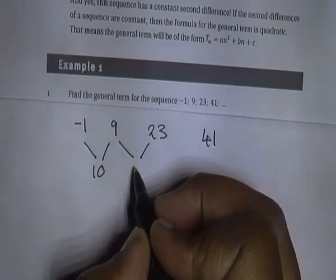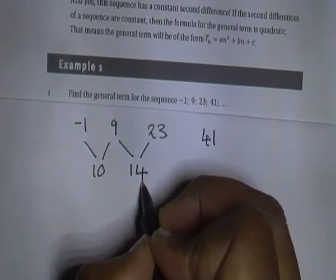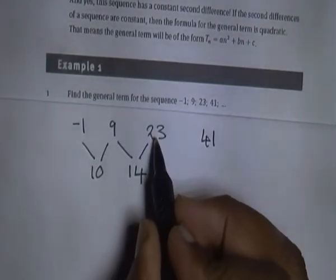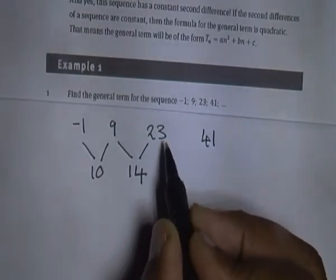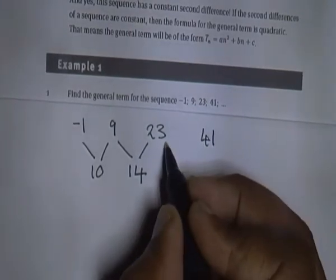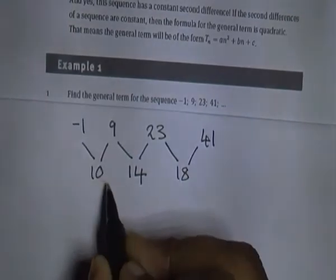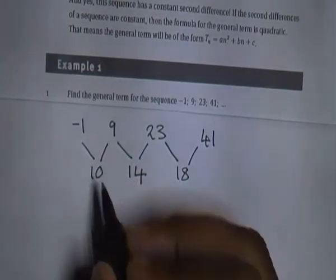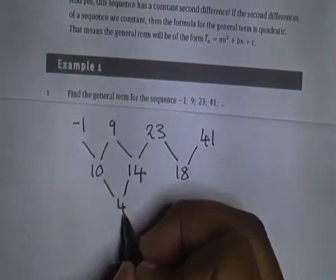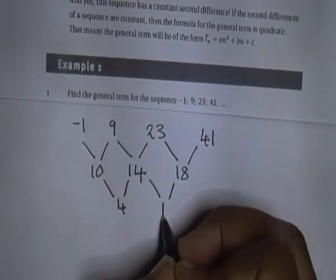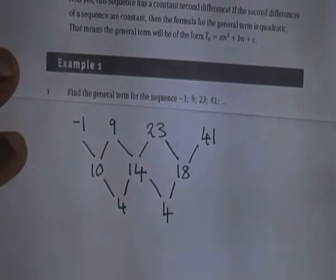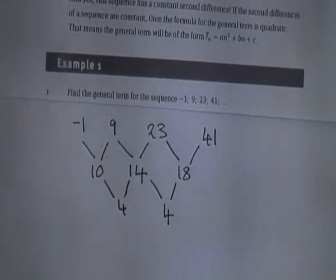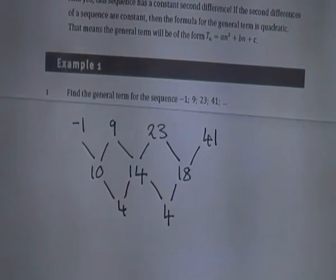The difference between 23 and 41 is 18. So what is the second difference? 14 minus 10 gives us 4, and 18 minus 14 gives us 4. So that is our second common difference.